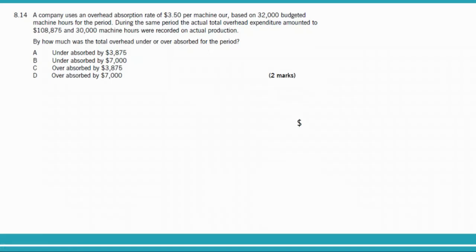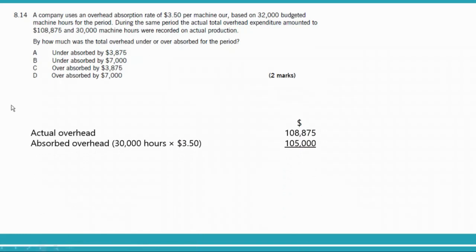Under/over absorbed is the difference between actual overheads and absorbed overheads. Actual overhead is $108,875. Absorbed overhead equals actual activity of 30,000 hours multiplied by OAR of $3.50, giving $105,000. The difference is $3,875. Since absorbed overheads are less than actual overheads, this is under absorbed by $3,875. Answer is option A.